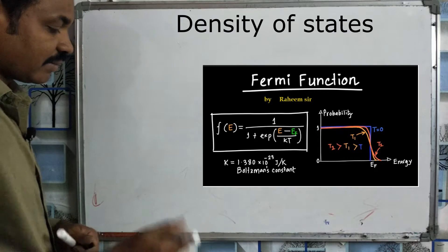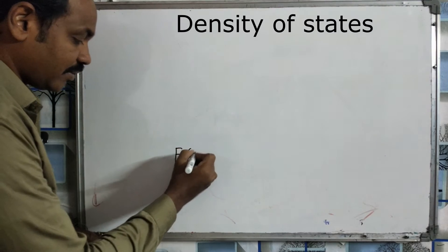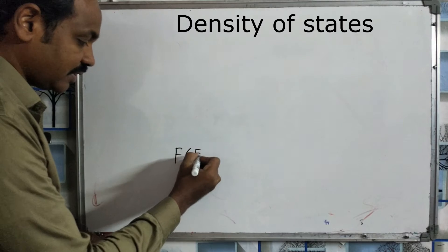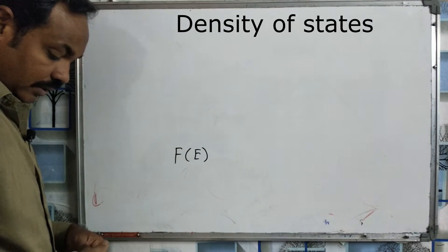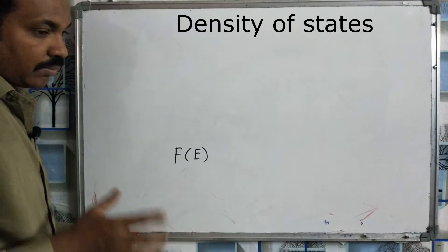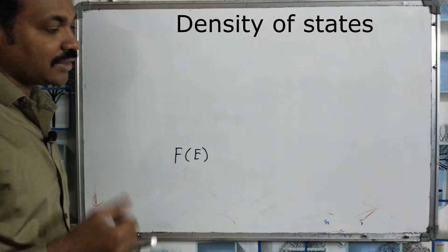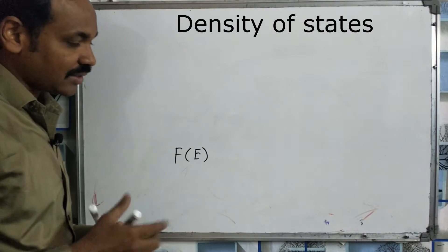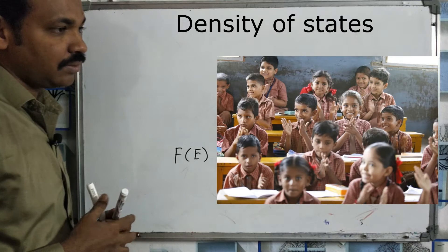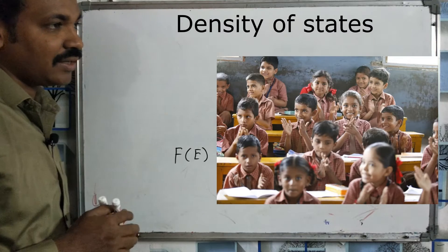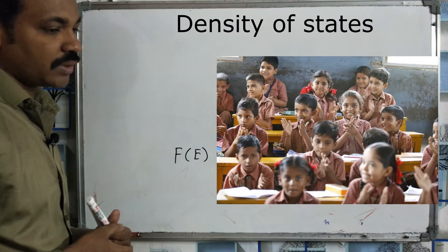We are going to discuss the Fermi function and the symbol of the Fermi function. We have to arrange the number of electrons. Suppose we arrange the classroom — the classroom will be arranged on the bench. The probability is that they will arrange the number of electrons.